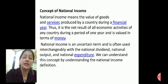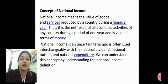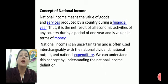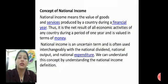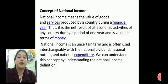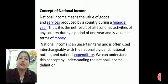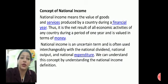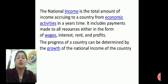National income is an uncertain term. Traditionally it is called by different names and definitions. According to different definitions, national income is used interchangeably with terms like national dividend, national output, national expenditure, and national production, but double counting can be a demerit in these definitions.